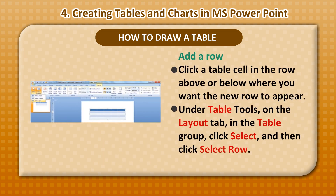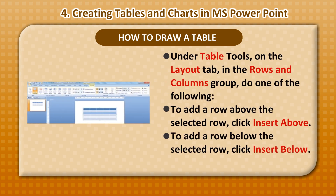Add a Row: Click a table cell in the row above or below where you want the new row to appear. Under Table Tools, on the Layout tab, in the Table group, click Select and then click Select Row. Under Table Tools, on the Layout tab, in the Rows and Columns group, do one of the following: to add a row above the selected row, click Insert Above; to add a row below the selected row, click Insert Below.